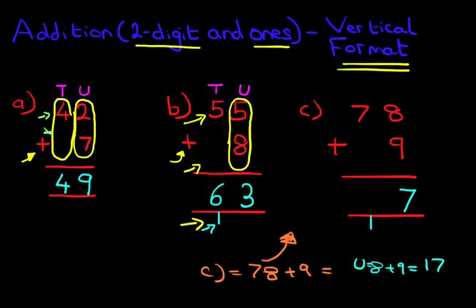Now, the tens. We've got 7 tens. The 78. The number 78 has got 7 tens plus this 1 over here. 7 plus 1 is 8. And there we have it. 78 plus 9 is 87. And that is how we add two-digit numbers and ones using the vertical format, which is also known as long addition.